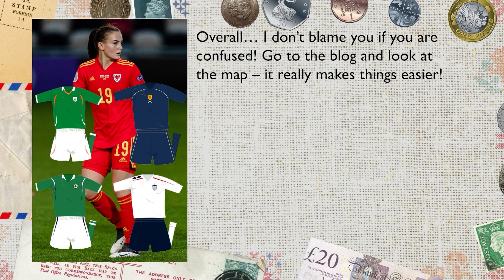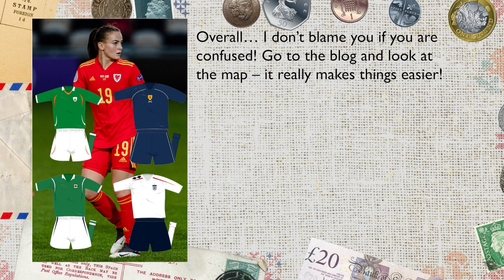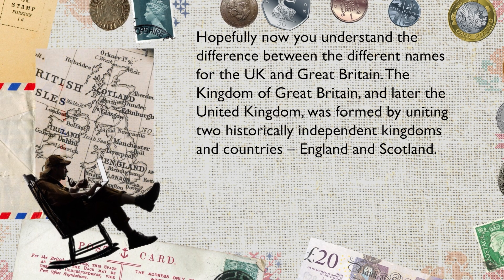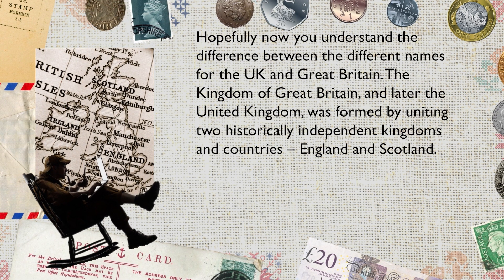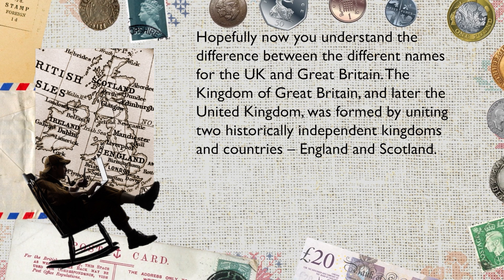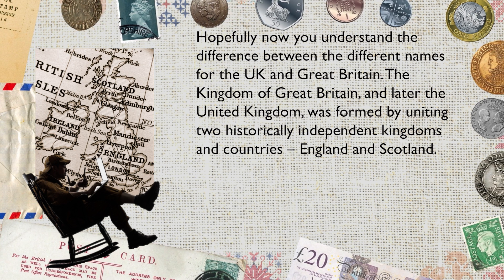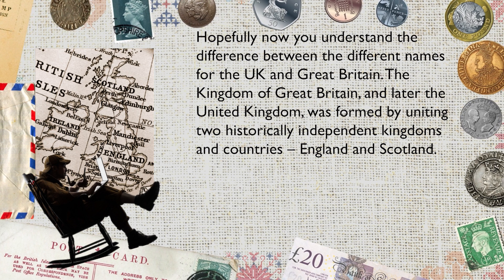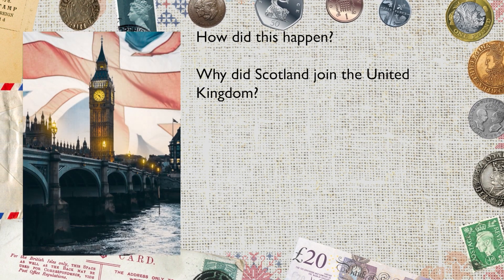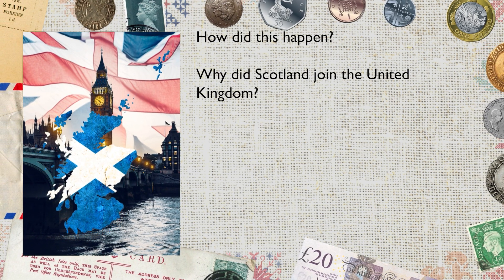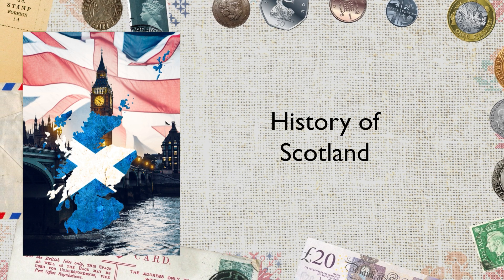Overall, I don't blame you if you are confused — go to the blog and look at the map, it really does make things easier. I really recommend it. So, hopefully now you understand the difference between the different names for the UK and Great Britain. The Kingdom of Great Britain, and later the United Kingdom, was formed by uniting two historically independent kingdoms: England and Scotland. But how did this happen? Why did Scotland join the United Kingdom? Well, let's start with the history of Scotland.